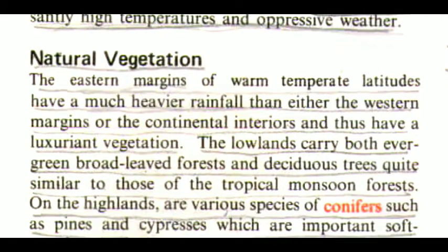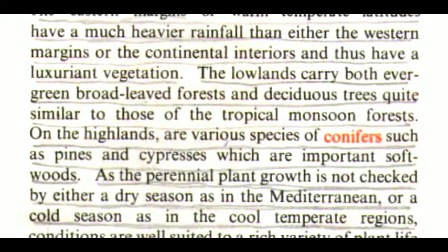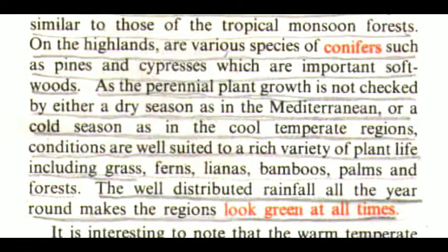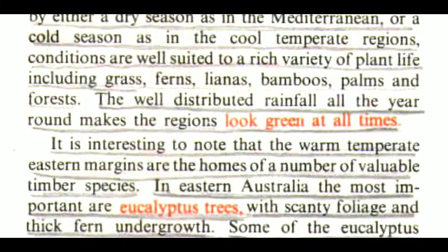The eastern margins of warm temperate latitudes have a much heavier rainfall than either the western margins or the continental interiors and thus have a luxuriant vegetation. The lowlands carry both evergreen broad-leaved forests and deciduous trees quite similar to those of the tropical monsoon forests. On the highlands are various species of conifers such as pines and cypresses, which are important softwoods. As the perennial plant growth is not checked by either a dry season as in the Mediterranean or a cold season as in the cold-temperate regions, conditions are well suited to a rich variety of plant life, including grass, ferns, lianas, bamboos, palms and forests. The well-distributed rainfall all the year round makes the regions look green at all times.